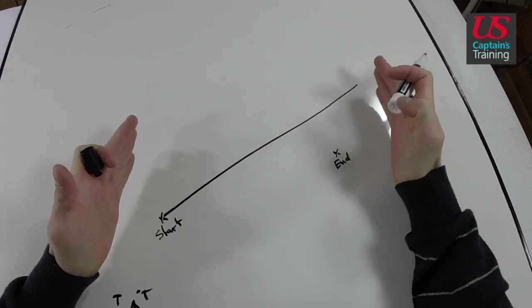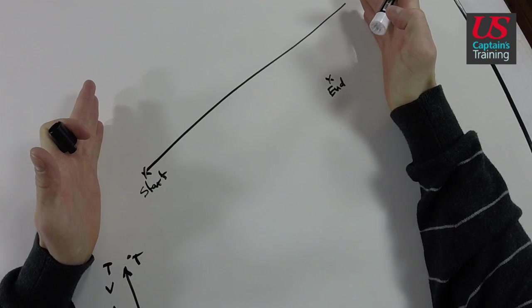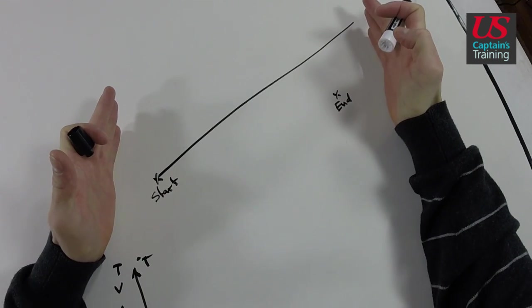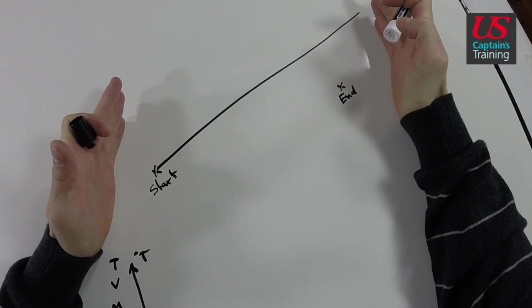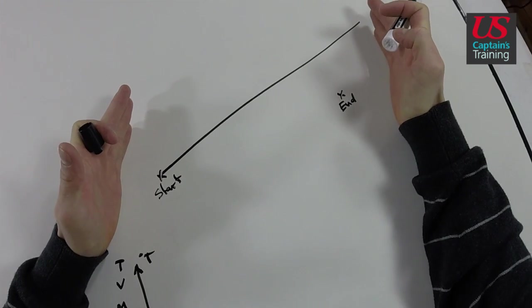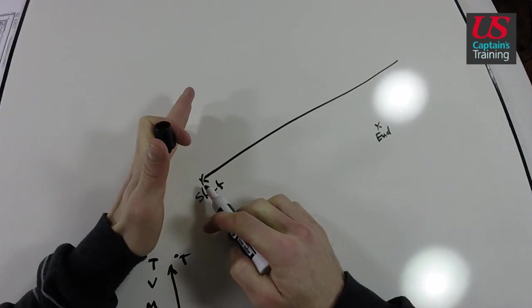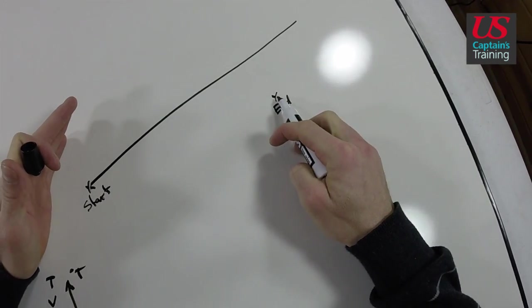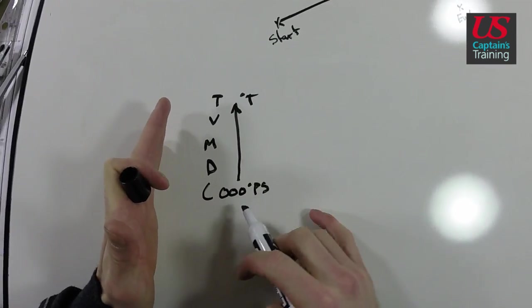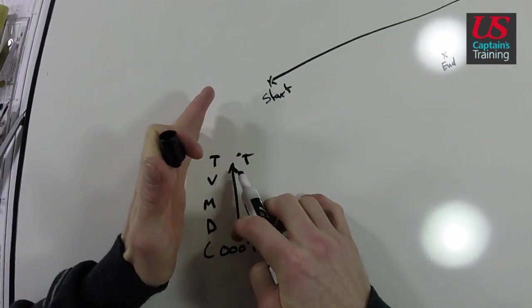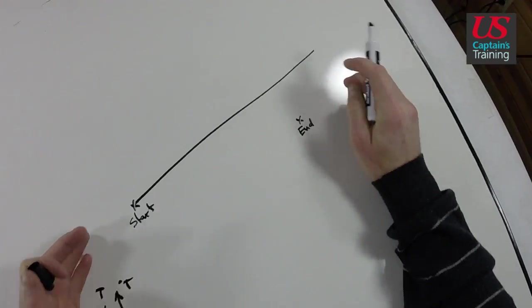This part is very important. You must get these three steps correct and accurate to solve the problem correctly. Find your starting point, find your ending point where you actually ended up, get the course in the problem, correct it up to true, and plot the course.